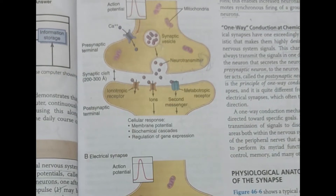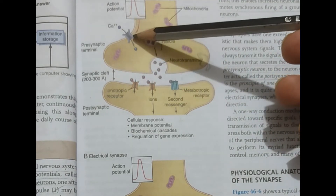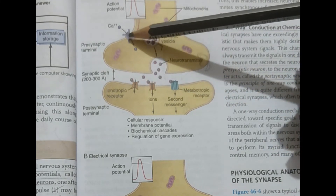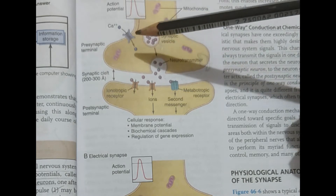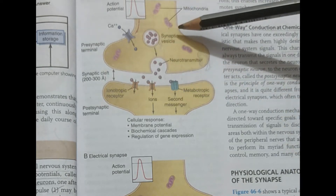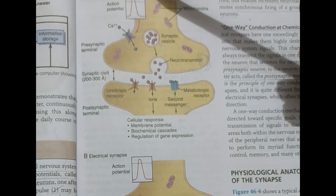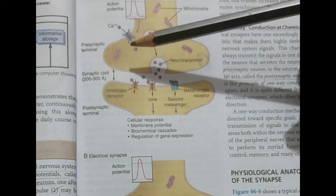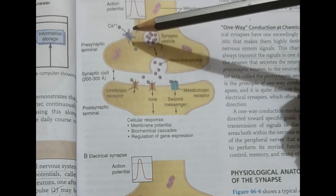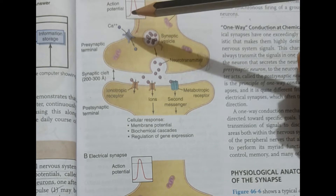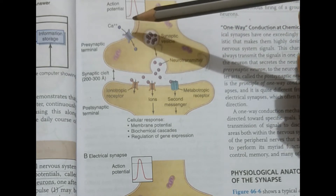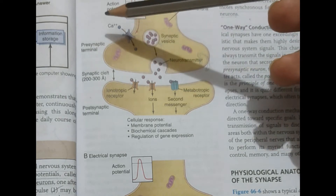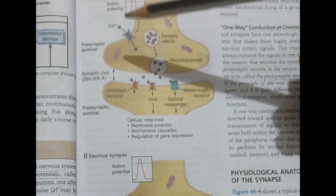In the presynaptic neuron terminal, there is a presence of calcium ion channels. These calcium channels are elicited by the action potential generated somewhere in the neuron, traveling in a specific direction. This action potential is responsible for stimulating the calcium ion channels, causing calcium ions to influx — that is, coming inside from the outside.